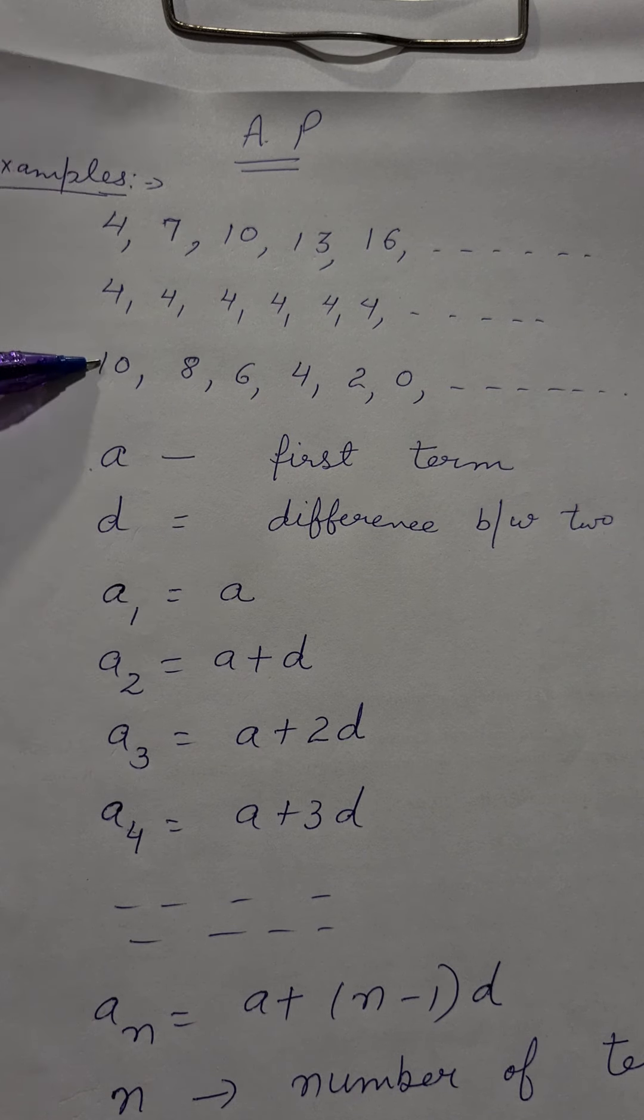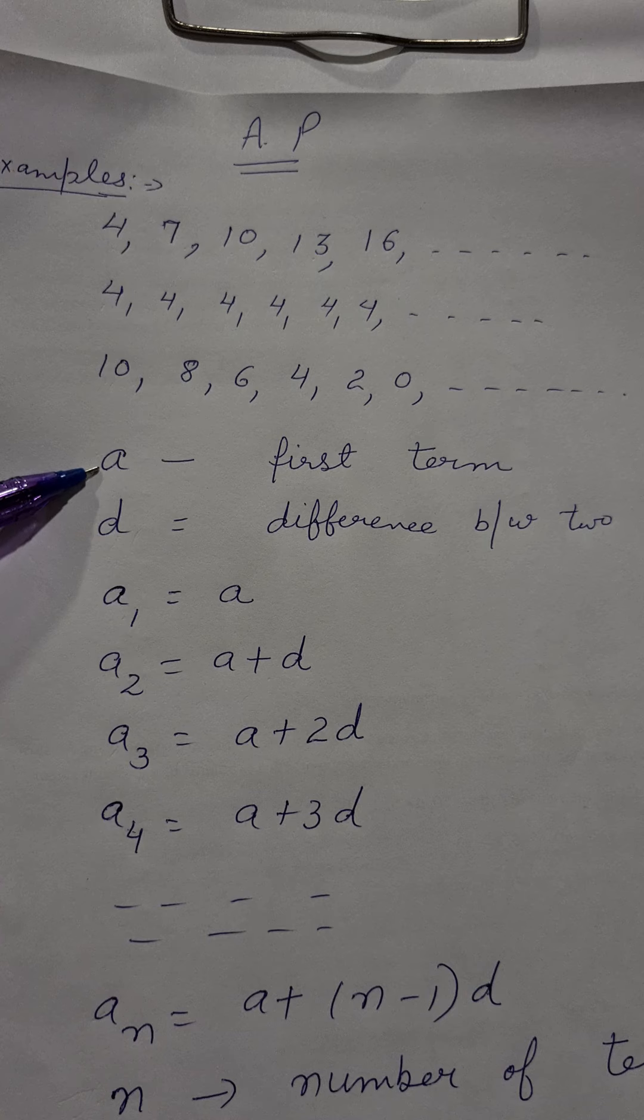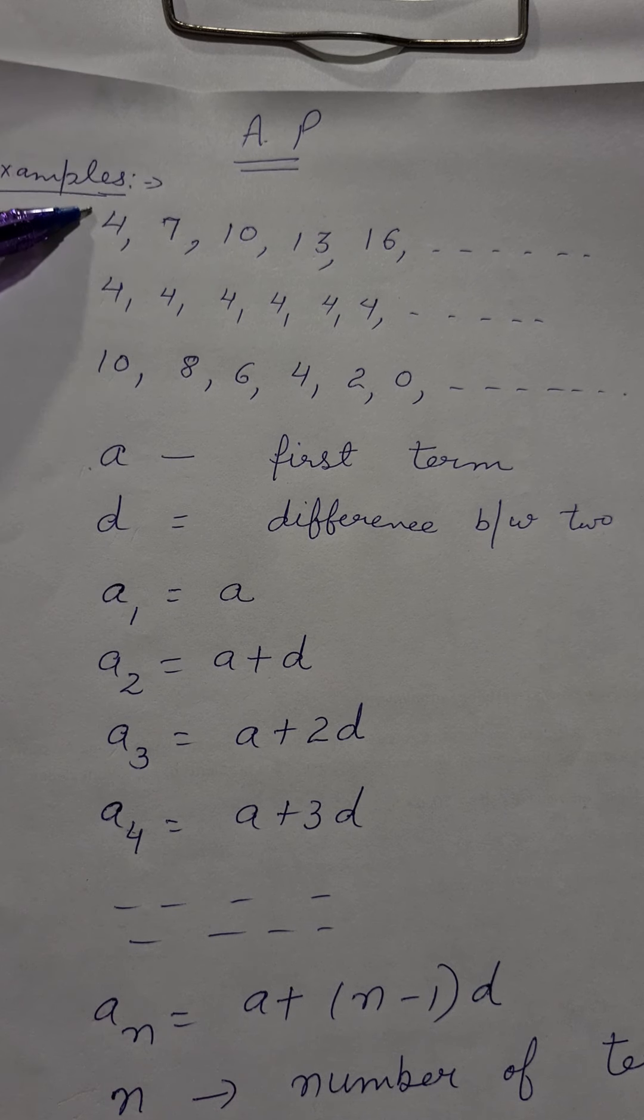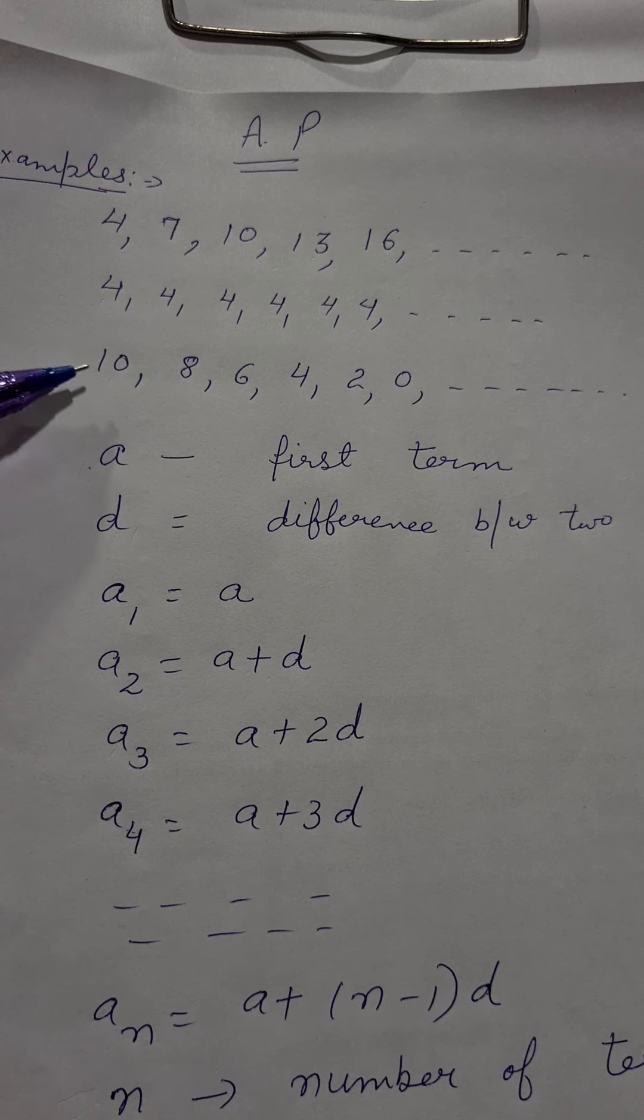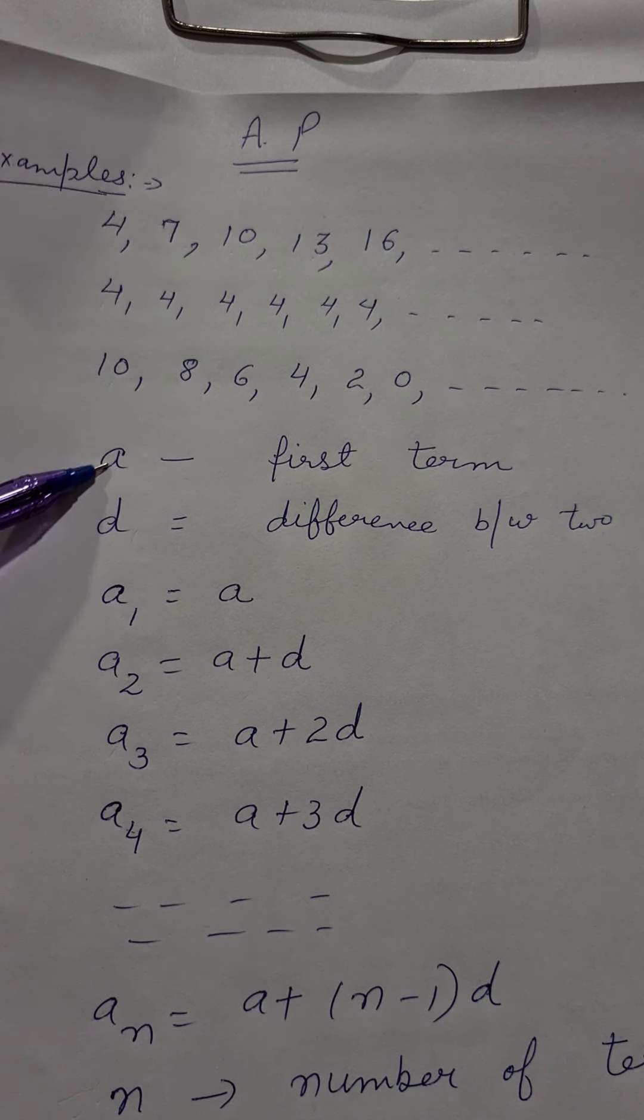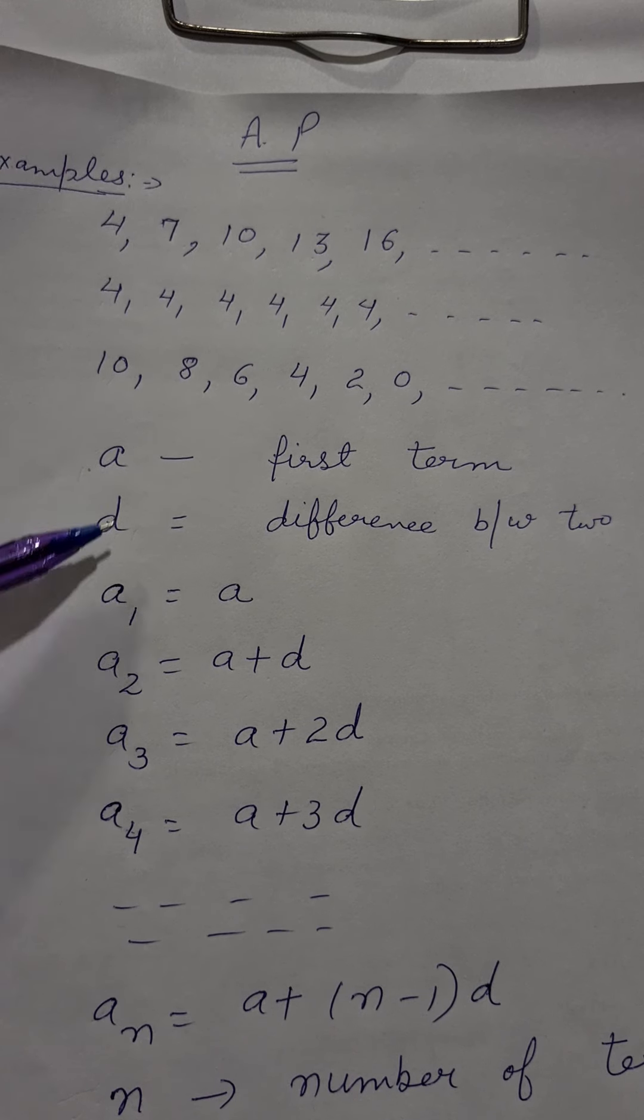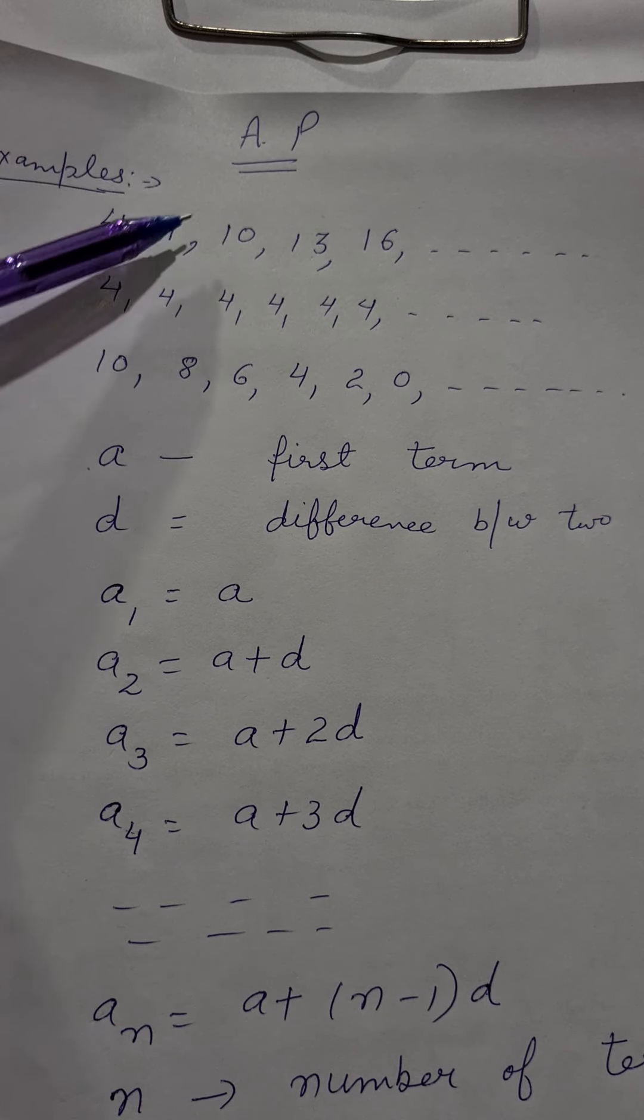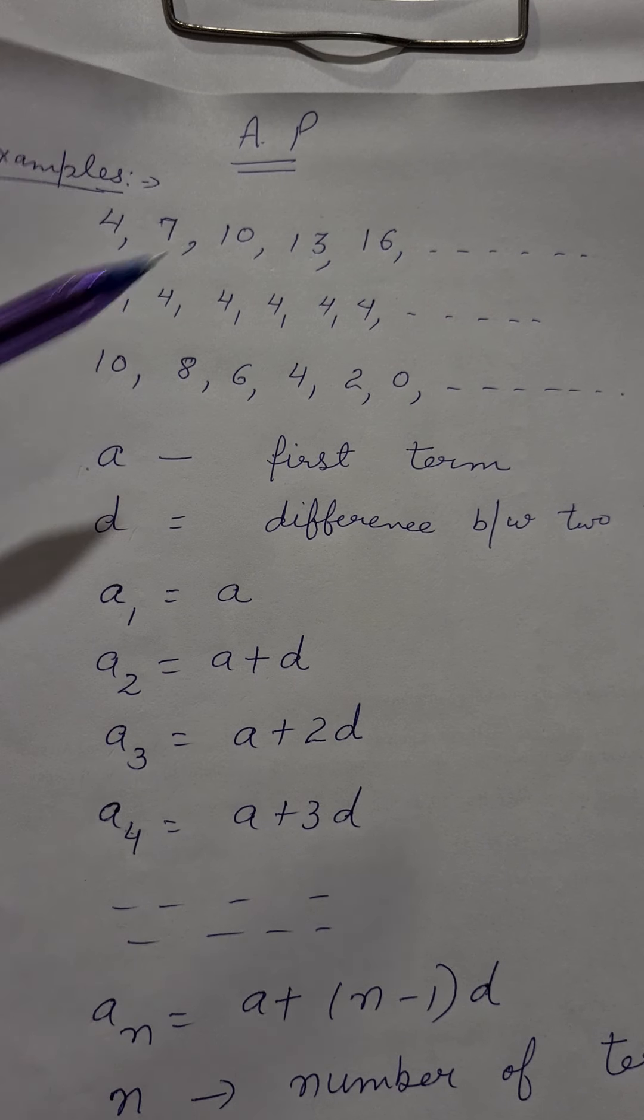Now in this, the terms which are used in main questions. 'a': a is the first term. Like in this the first term is 4. In this it is 10. Whichever is the first number, that is called the first term. 'a' denotes it. Next came 'd': difference. Like in this 3, 3 plus is coming. In this zero, zero plus is coming. In this minus 2.